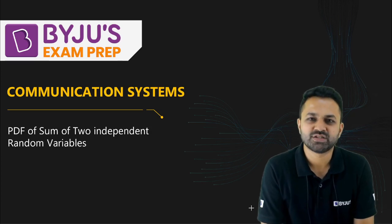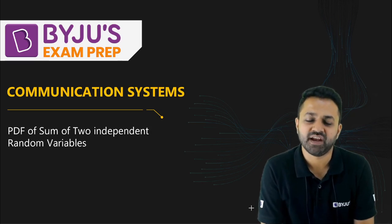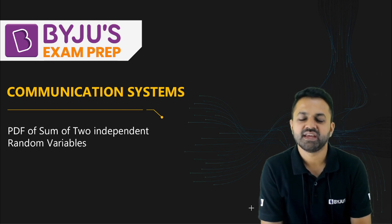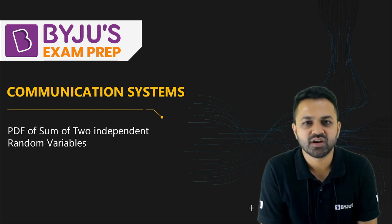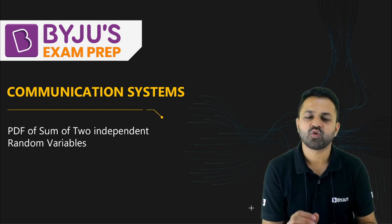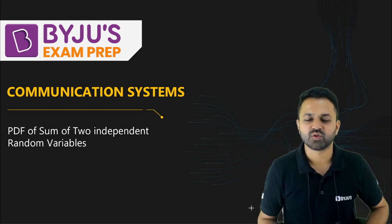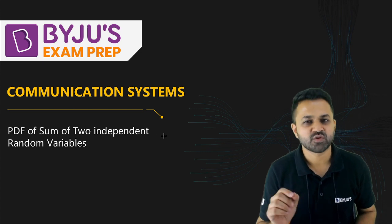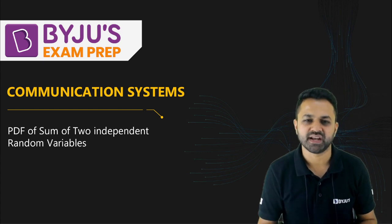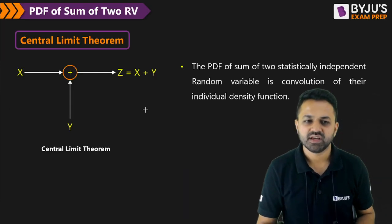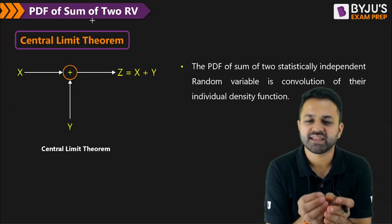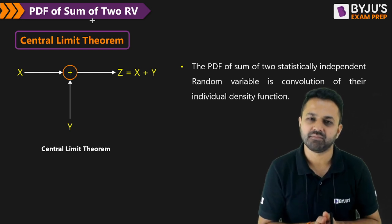Hello everyone, welcome to Baju's Exam Prep and welcome to this new series which is Tricopedia. Here we are going to learn how quickly you can calculate the PDF of the sum of two independent random variables. The concept behind that is the central limit theorem.